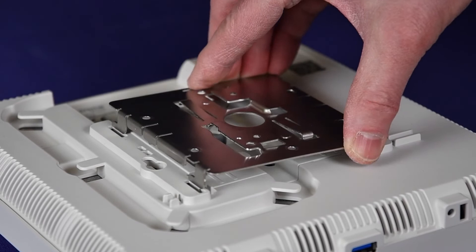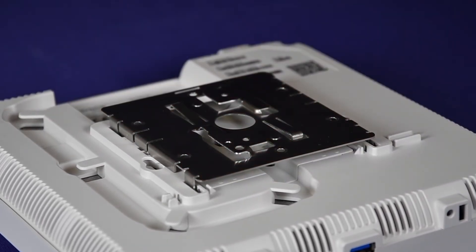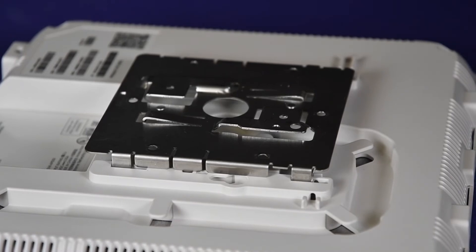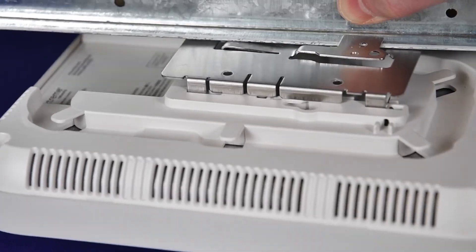Attach the access point to the main mounting bracket by aligning the access point mounting holes against the bracket feet. Hold and rock the access point back and forth to ensure that it is securely mounted.